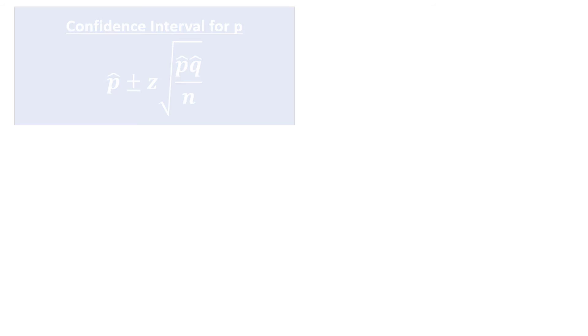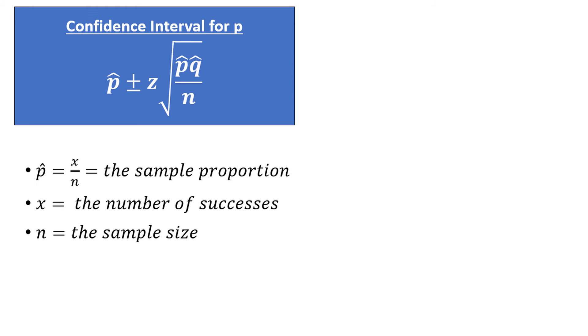Alright, now we are ready to introduce the formula for the one sample confidence interval of the population proportion p. The formula is p-hat plus or minus z times the square root of p-hat times q-hat divided by n. p-hat is the sample proportion, and is calculated by taking x and dividing by n. x is the number of successes in our sample, and n is the sample size. z is the positive z-score corresponding to our level of confidence. q-hat is just 1 minus p-hat.